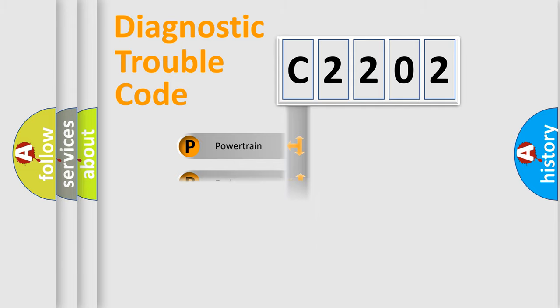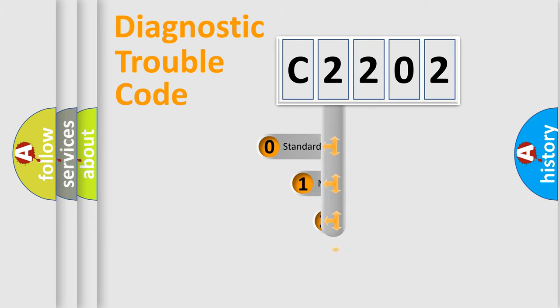We divide the electric system of automobile into four basic units: Powertrain, Body, Chassis, and Network. This distribution is defined in the first character code.